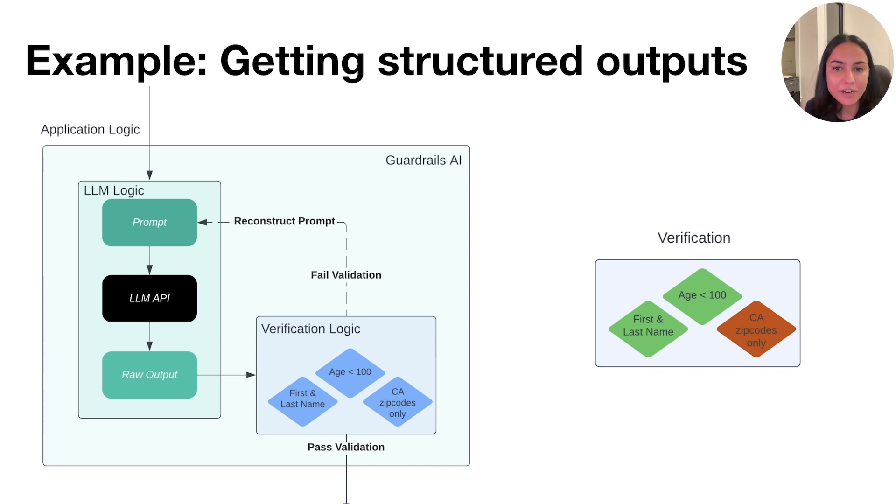This output is passed over to the verification system, and when we verify it, we essentially have two verification programs that pass, and a third verification program that requests California zip codes only fails. Because this logic failed, we essentially re-trigger prompting.